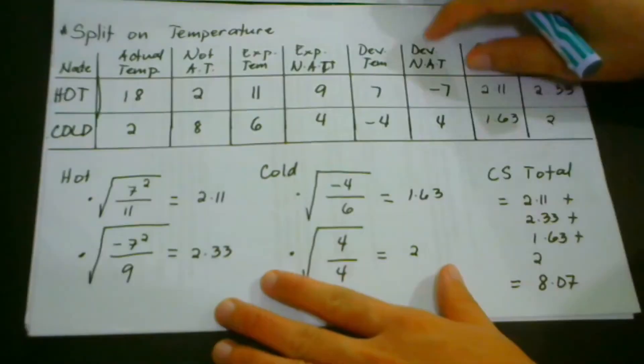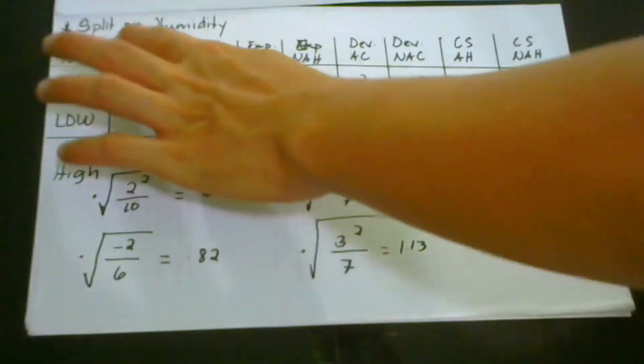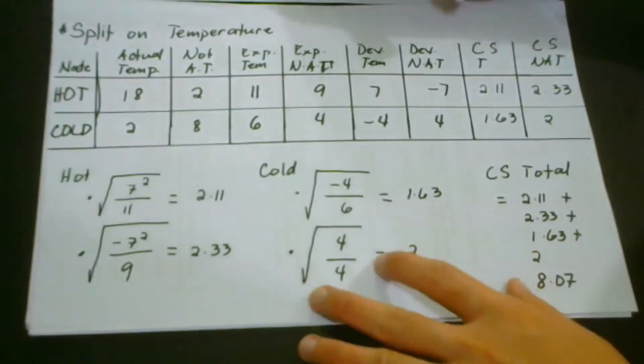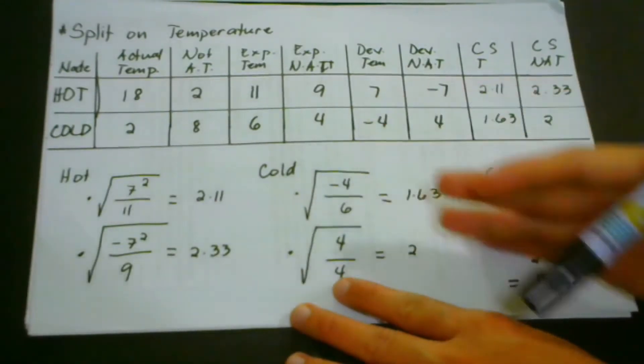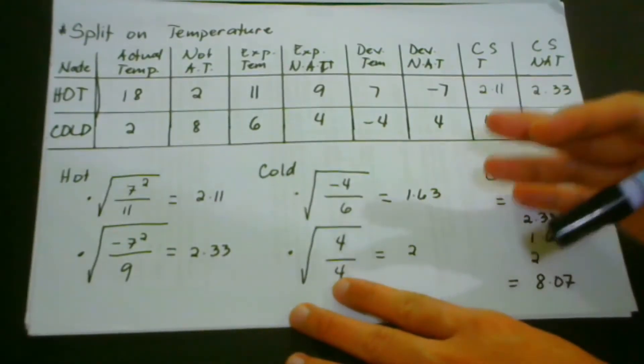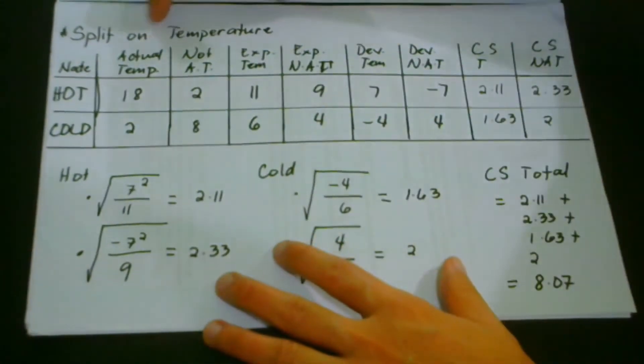So for better understanding, let's have this example. So once again, we have here two splits. We have the split on temperature and the split on humidity, but we're going to have them one by one. So don't be intimidated by these numbers because we're going to have them one by one.